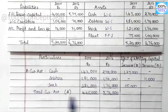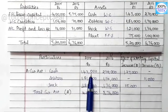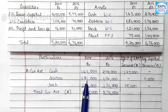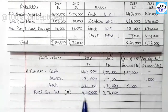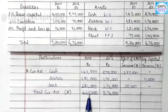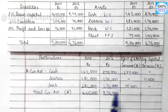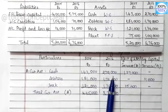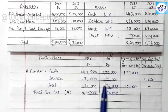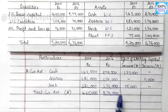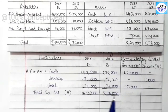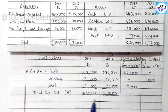Now let's find the total current assets. For 2015: 1,43,000 plus 1,81,000 plus 1,21,000 equals 4,45,000. For 2016: 2,70,000 plus 1,70,000 plus 1,36,000 equals 5,76,000. Next, we move to current liabilities.